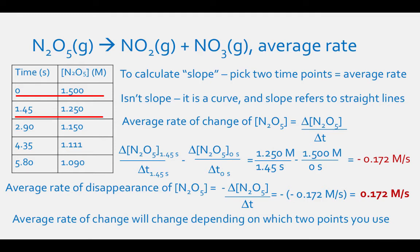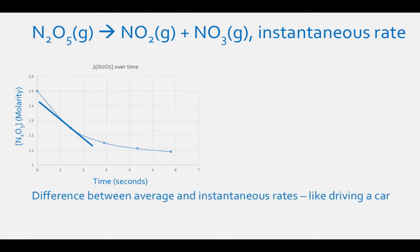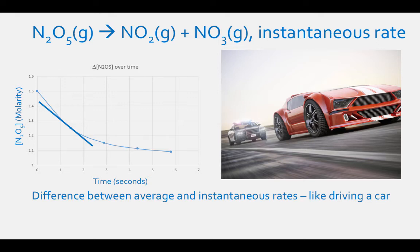Since this line is a curve and we are not truly measuring the slope of the line, the average rate of change is going to change depending on which two points you are using. To determine the instantaneous rate of this reaction, we need to draw a line tangent to the curve and determine its slope, because it will be a straight line. The difference between average and instantaneous speed is analogous to driving a car: you might drive on average 50 miles per hour to get home, but you could have sped up to 60 miles per hour when accelerating onto a highway ramp, and slowed down to 45 miles per hour when you saw a police car behind you. To find the instantaneous rate, it is best to plot your graphs in Excel to determine tangent lines at a specific time. Then pick two points around that time, estimate the concentrations, and find the slope by taking rise over run of this straight line.